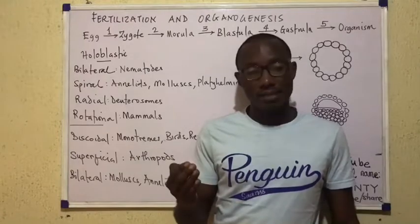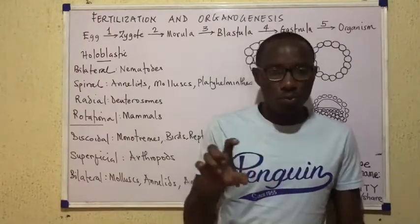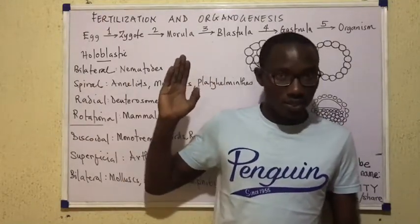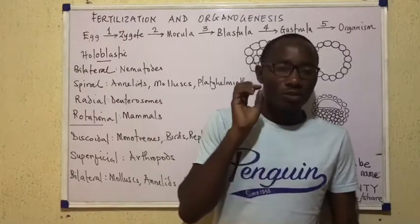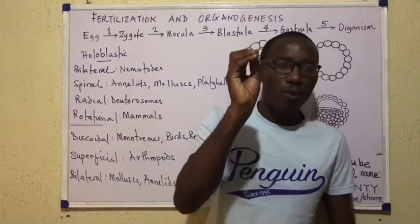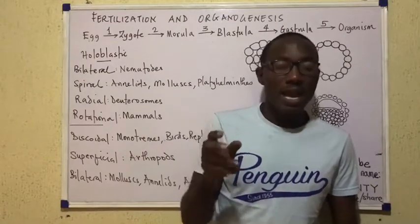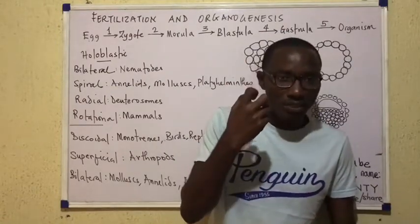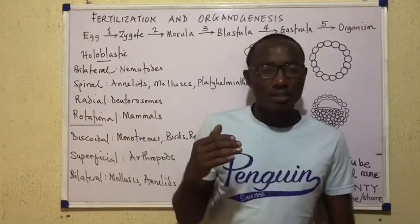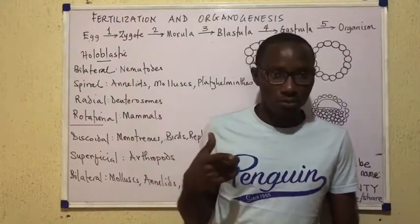our eggs contain very little yolk. That's why within that one week or so period where all of these processes take place, the morula needs to find its way to the uterus and get implanted there. Why does implantation need to occur early? Because the yolk finishes in no time and the developing embryo needs to get nourishment from the mother. So implantation has to take place early so that even though yolk gets exhausted, the embryo is still able to survive.